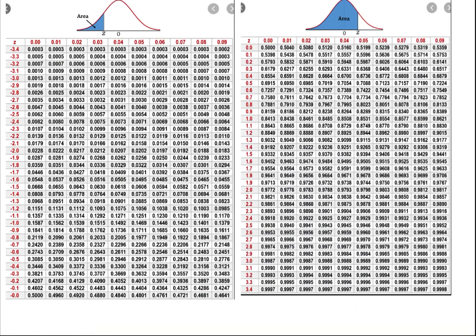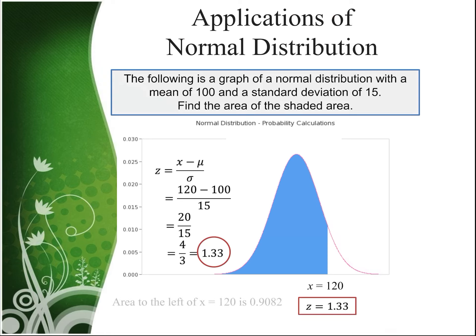So let's see, the z was 1.33, so that would be a positive z-score, so that's on the right side. We have 1.3 for the first two decimal places, and then .03 for the second. So it looks like we have a probability of .9082. So apparently, the area to the left of x equals 120 is .9082.